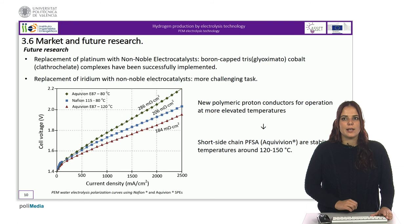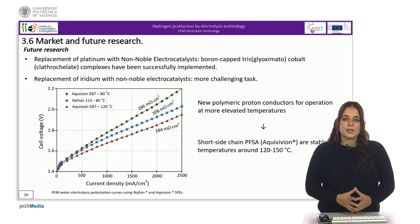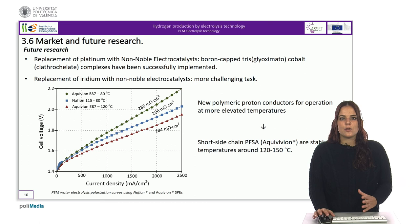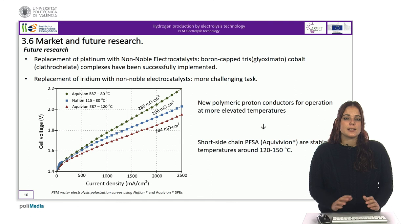For example, the replacement of platinum with non-noble electrocatalysts. Different compounds have been identified as potential candidates for the replacement of platinum at the cathode. The idea developed by Millet and colleagues is to use mononuclear compounds that contain cobalt, nickel, or iron active centers. Another challenge is to find new polymeric proton conductors for operation at more elevated temperatures. Conventional solid polymer electrolytes are limited to operating temperatures less than 90°C. Above this, the water swelling properties are affected such that the water content becomes too high and membranes can lose their mechanical properties.